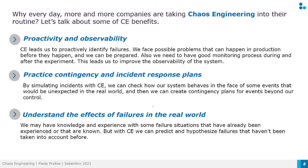We also need to have a good monitoring process during and after the experiment, which improves the observability of the system. Then we can practice contingency and incident response plans — by simulating incidents with Chaos Engineering, we can check how our system behaves facing unexpected events in the real world and create contingency plans. We can also understand the effects of failures and predict hypothesize failures that haven't been taken into account before.